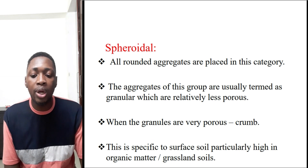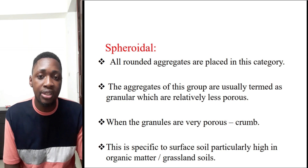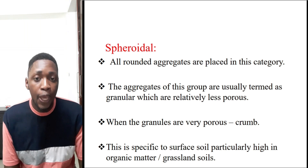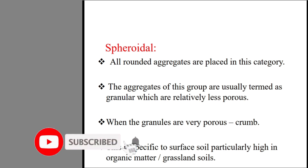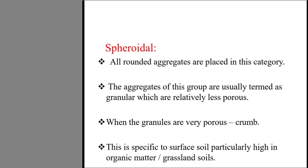Next we have the spheroidal structure, whereby all rounded aggregates are placed under this category. If an aggregate is round in shape, it is classified under spheroidal soil structure. The aggregates of this group are usually termed as granular, which are relatively less porous. When the granules are very porous, they form a crumb structure.